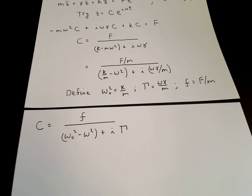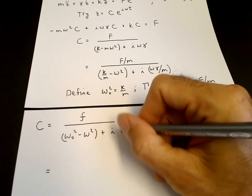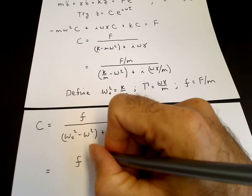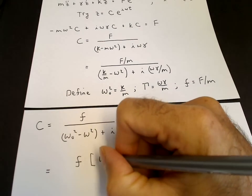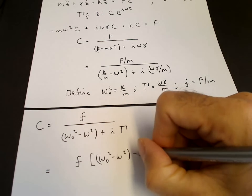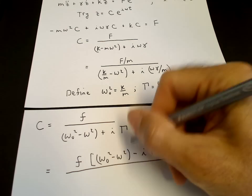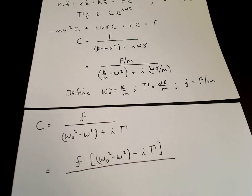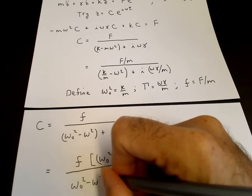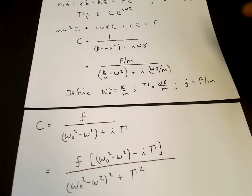We can write c as a complex number a plus i b by multiplying by the complex conjugate of the denominator. So we have f times omega naught squared minus omega squared minus i Gamma, all over the modulus squared of the denominator: omega naught squared minus omega squared, all squared, plus Gamma squared.